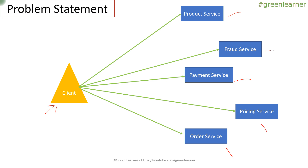As per the functionality, requirement, and load, for example at a certain point in time the product service is getting high load independent of others — it is getting more requests. So I have to increase the instances of the product service so it can serve more requests. Initially it was one instance, but when the load is increasing I have to increase from one to two then three, and when demand is decreasing I come back to two and then one instance.